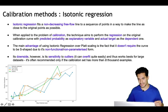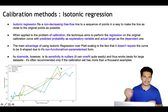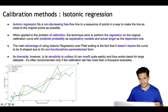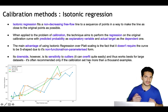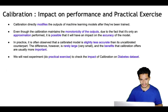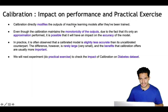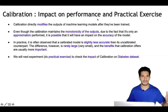The downside of isotonic regression is that because of its non-parameterized, free-form nature it's sensitive to overfitting and works best on large datasets. It's often recommended when the calibration set has more than a thousand examples.